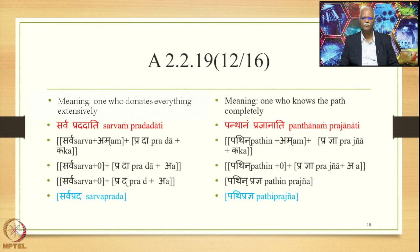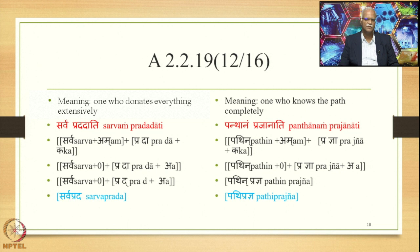Similarly, when the meaning is 'one who knows the path completely,' the laukika vigraha is Panthanam Prajanati. The suffix Ka is added after the verbal root Nya; Upapadam Ating states the Upapada Samasa. We have Pathin plus Am plus Pradhya plus Ka as the Alaukika Vigraha. Samasa Samjna and Pratipadika Samjna happen, then Supodhatup Pratipadika Yoha applies giving Pathin plus zero plus Pradhya plus A. Because of suffix A with marker Ka, the vowel A in Dhya is deleted, and Na at the end of Pathin is deleted, giving Pathipradhnya as the finally derived compound output.